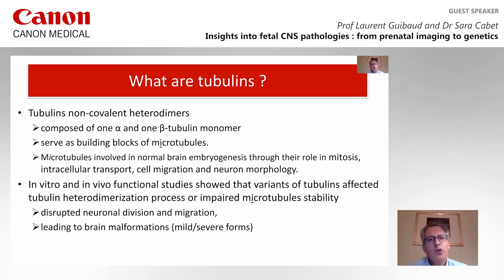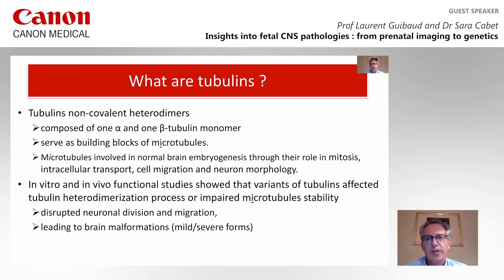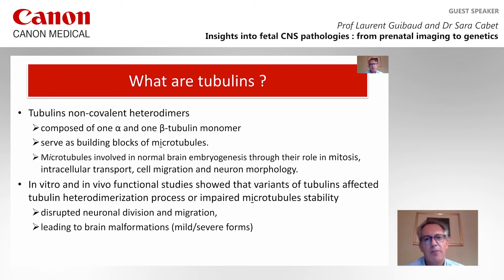Tubulins are non-covalent heterodimers composed of one alpha and one beta-tubulin monomer, which serve as building blocks of microtubules involved in normal brain neurogenesis through their roles in mitosis, intracellular transport, cell migration, and neural morphology. Studies show that variants of tubulins affect the tubulin heterodimerization process or impair microtubule stability, leading to disruptions of neural divisions and migrations.